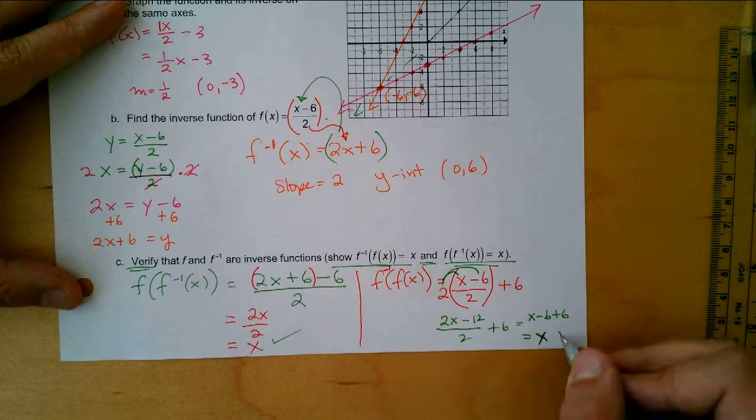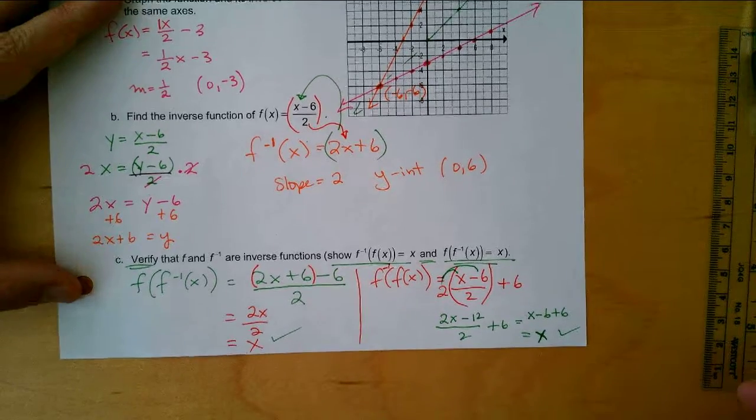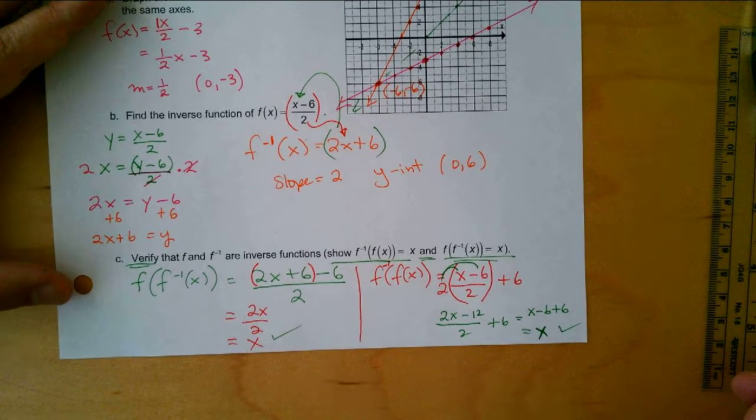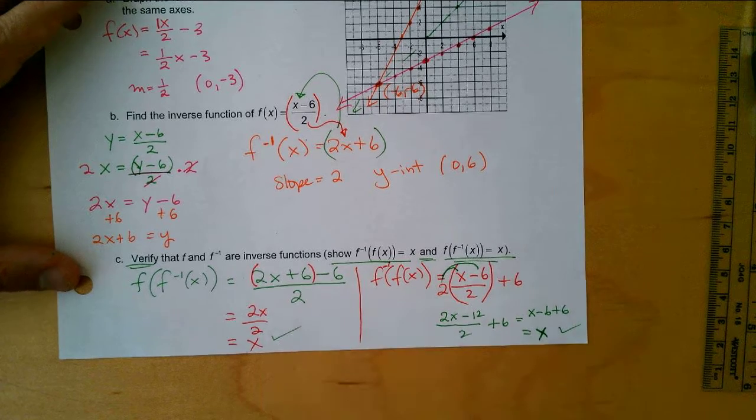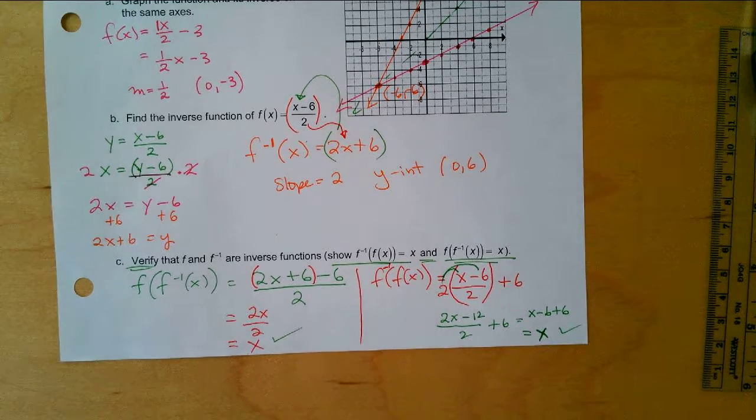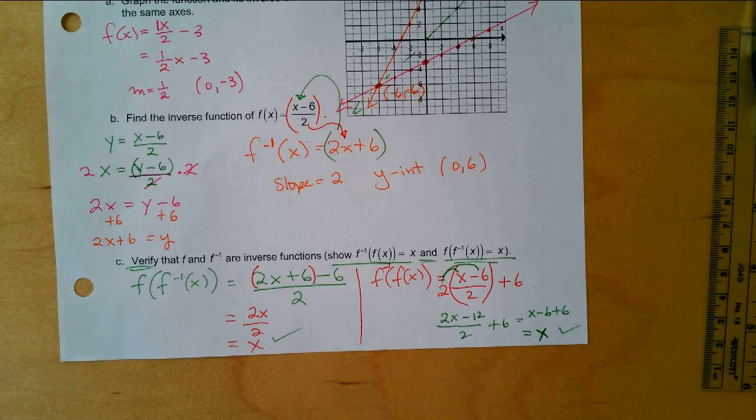So for both of them they worked out. And the reason why you want to do that is because if you miss a step or if you make a mistake and then if you don't verify it, then how do you know that you really have found the inverse?